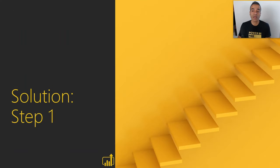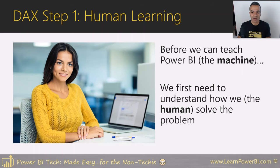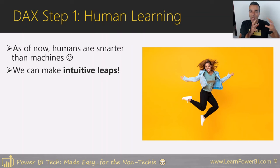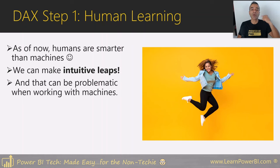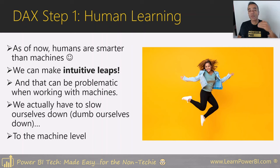Step one is what I call human learning. This is very important, because before we can teach the machine — Power BI — we first need to understand how we humans are solving the problem. As of now, humans are smarter than machines because we can make intuitive leaps. Machines can't quite do that. So step one is to slow down that human learning — instead of leaping, break it down step by step, and understand almost step by step how you as a human are solving that problem.